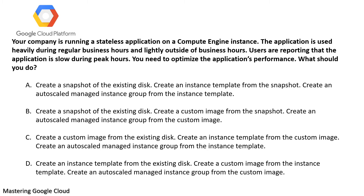To create the instance group you have a couple of steps to take. Option A: Create a snapshot of the existing disk, then create an instance template from the snapshot. However, instance templates are created from an image, not from a snapshot. So you rule out option A. Option B: Create a snapshot of the existing disk, create a custom image from the snapshot. That part is correct.